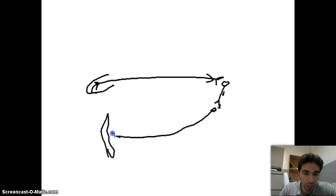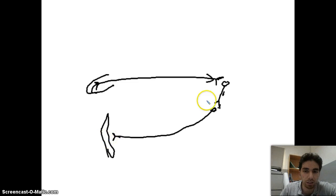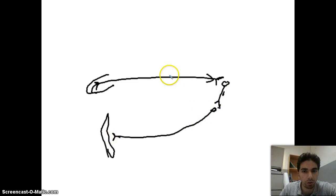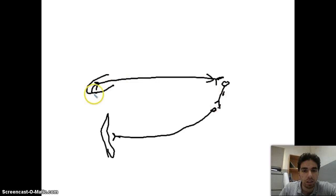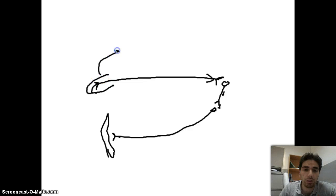The interneuron will signal through another synapse to the motor neuron. The motor neuron will give a signal to the muscle. We have a synapse between the neuron and the muscle, between the interneuron and the motor neuron. The signal passes to the muscles, the muscles contract, the hand moves — that's a typical reflex.